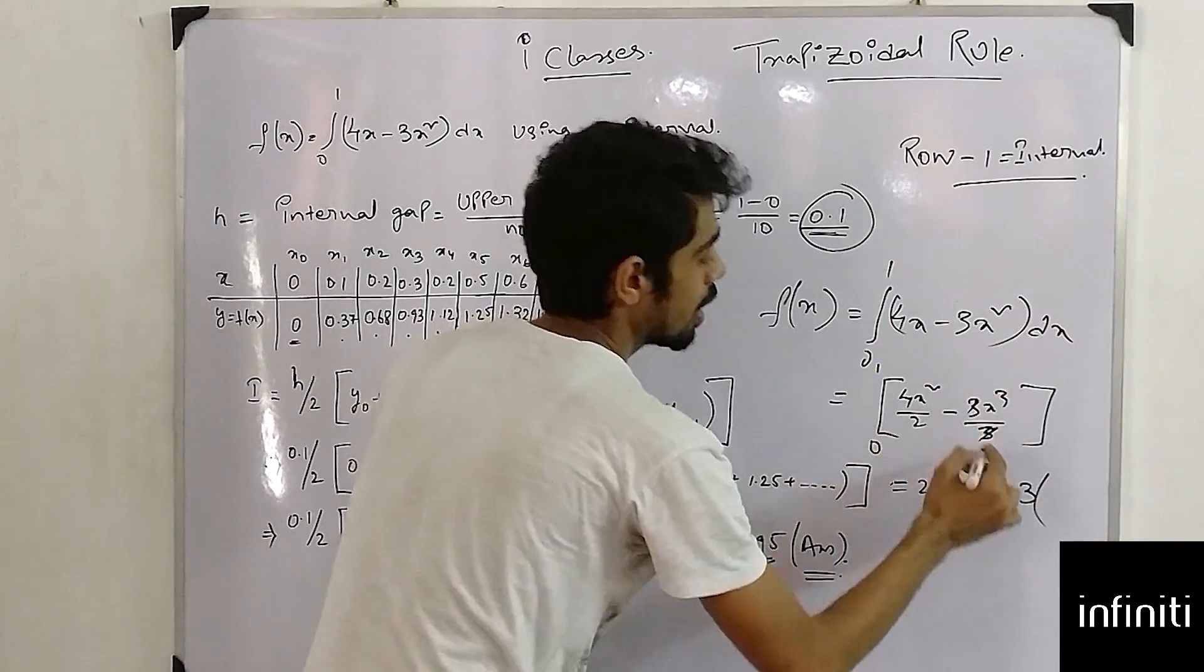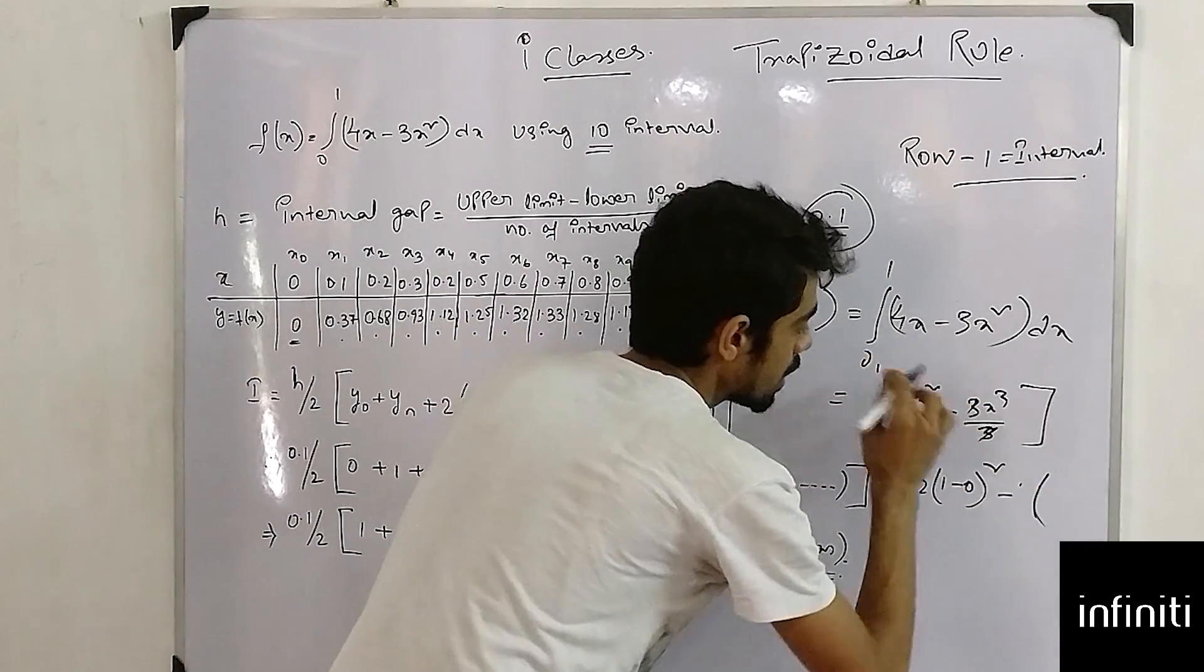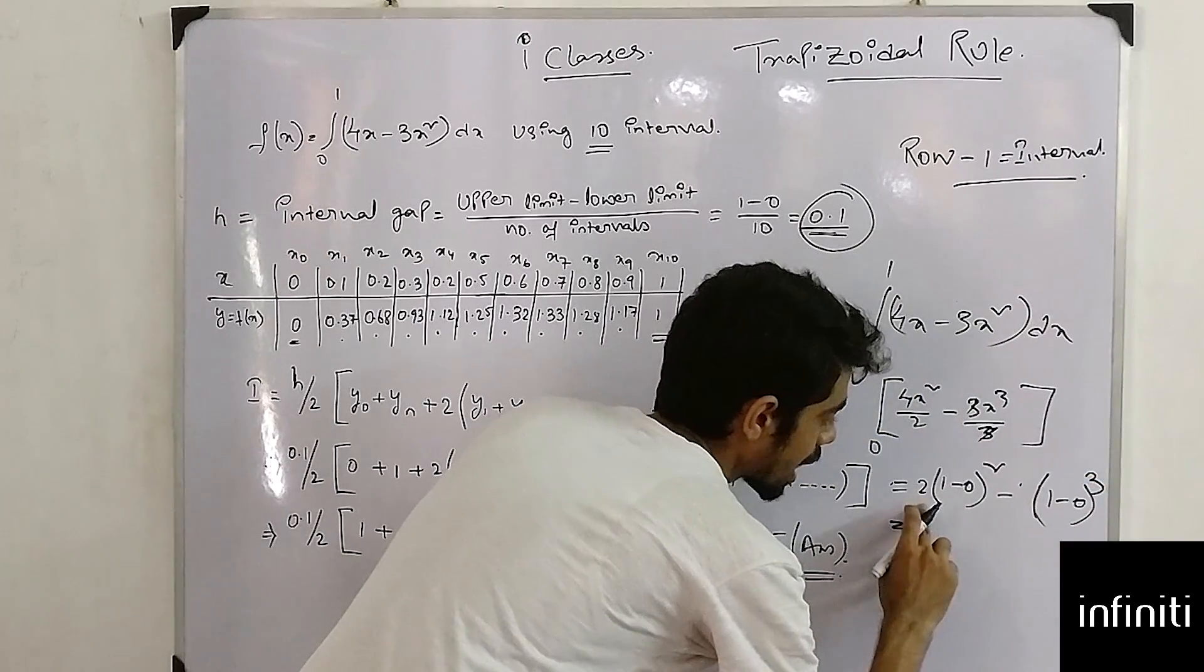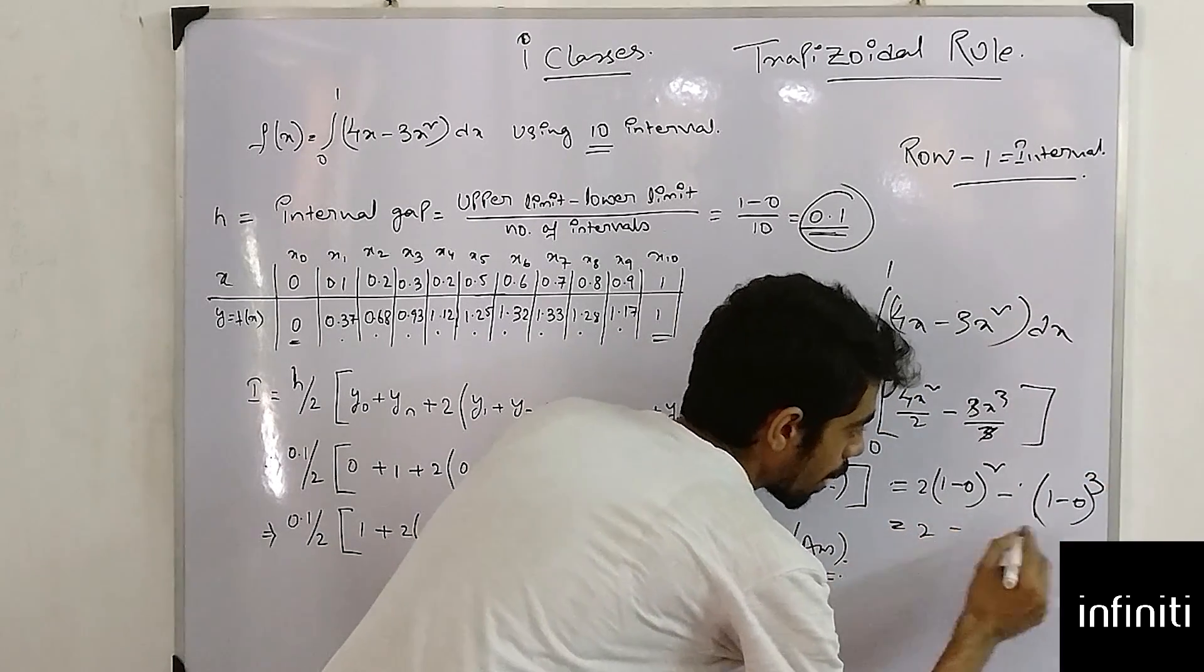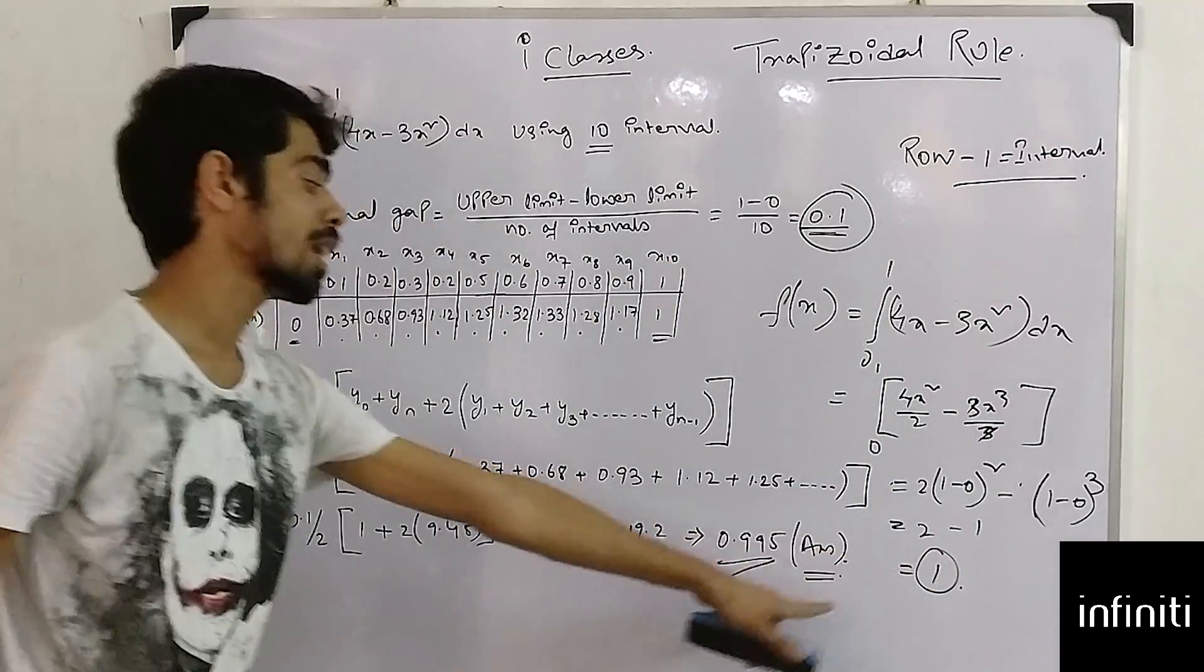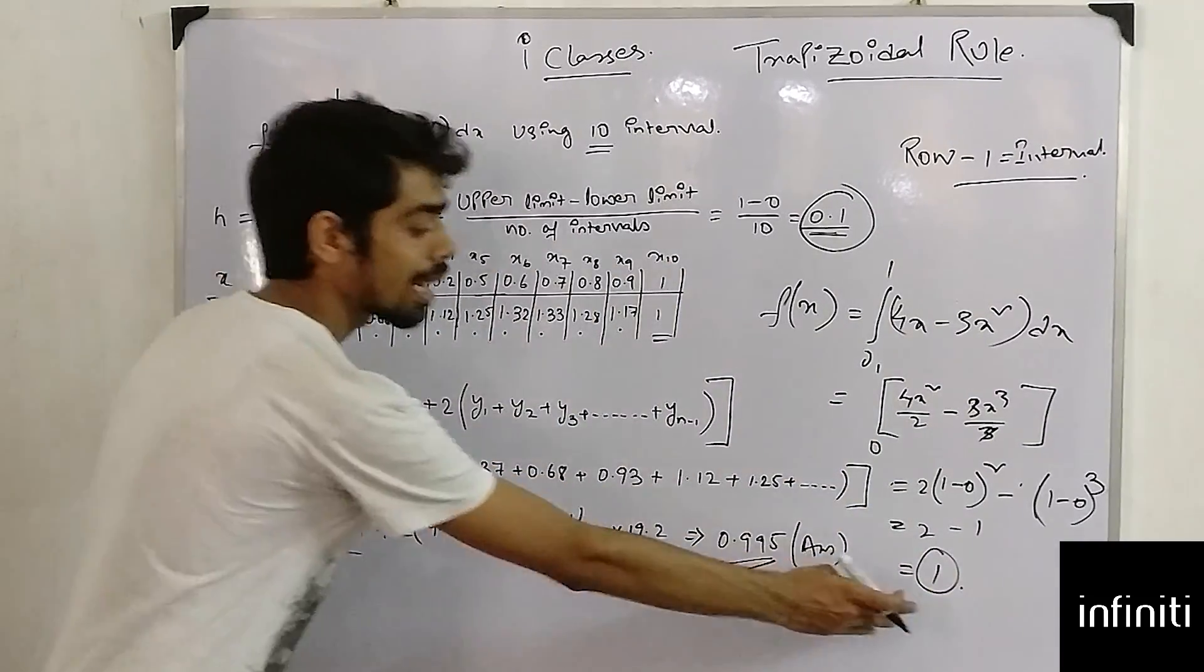3 by 3 cancel so I will not consider 3. x cube means 1 minus 0 whole cube. What I am getting: 2 into 1 is 2 minus 1 cube which is 1 again 1, which is just near about 0.995. So from this I can conclude that my answer is correct and this is the formula you just memorize it for trapezoidal rule.